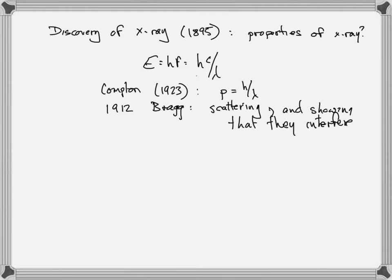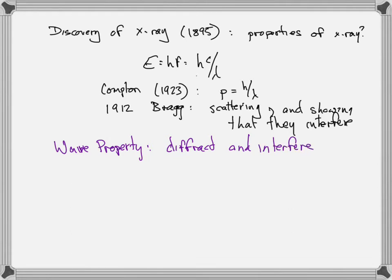We're talking about the fact that photons have both wave-like and particle-like properties. What defines a wave? One of the things that explicitly defines a wave — a wave property that is something which explicitly shows that something is a wave — is this idea of diffraction and interference. Only waves diffract and interfere; particles do not.